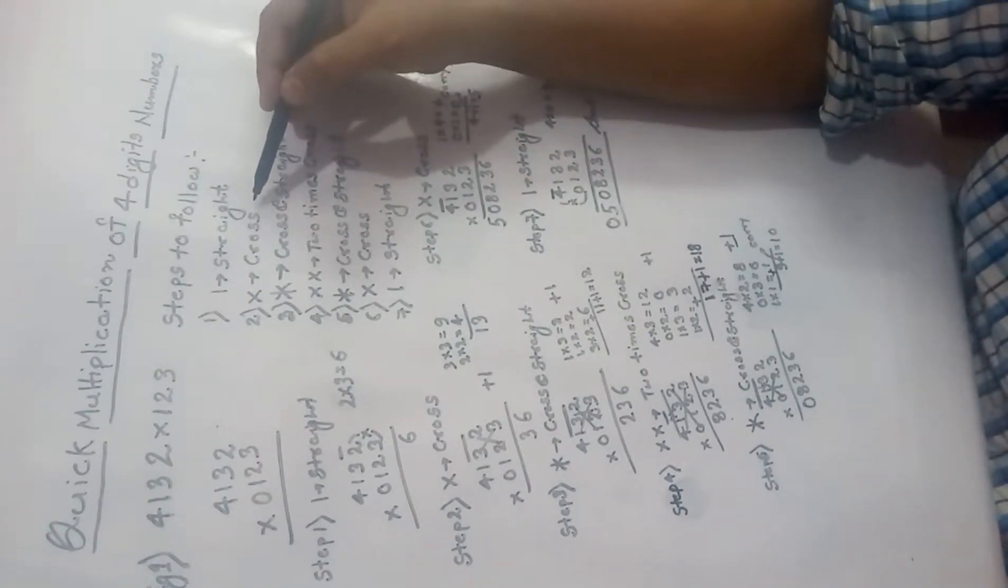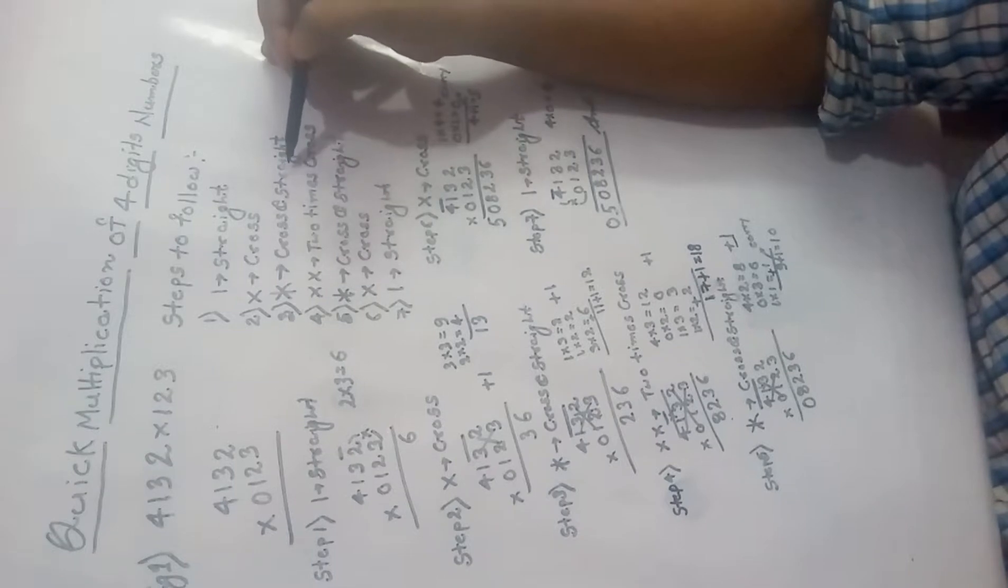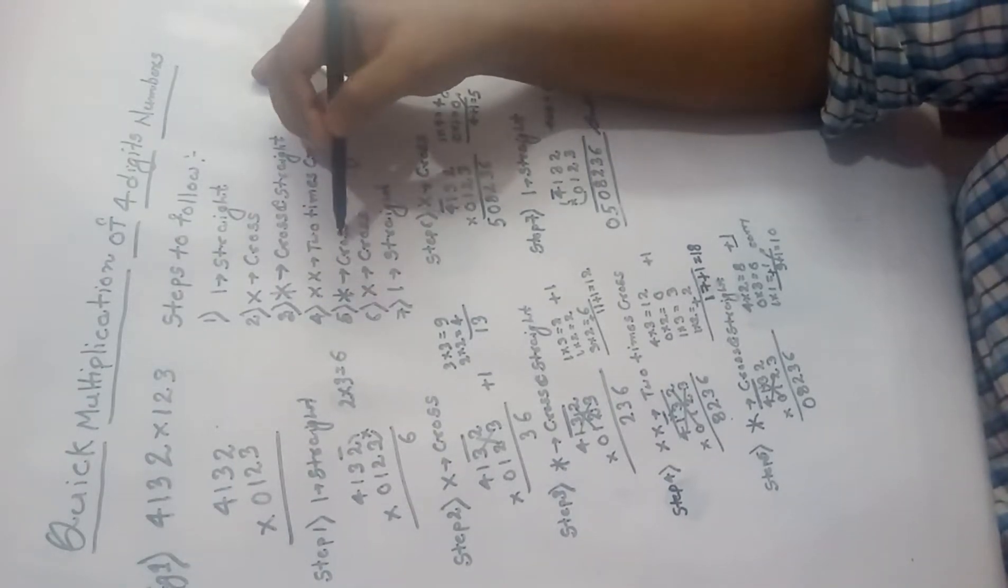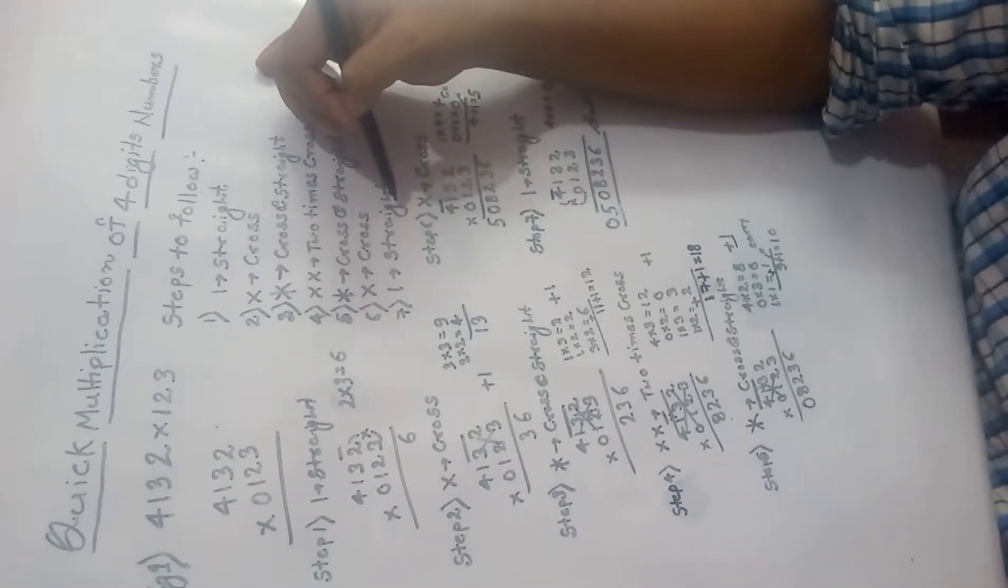First is straight multiplication, then cross multiplication, then cross and straight multiplication, then two times cross multiplication, then cross and straight multiplication, then cross multiplication, and then again straight multiplication.